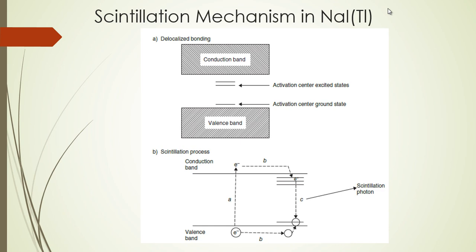In your sodium iodide crystal there are valence bands and conduction bands due to the delocalized electron bonding. The thallium impurity replaces one in a thousand atoms of sodium iodide — it is a very small impurity. Without thallium, the sodium iodide crystal has these two bands: the valence band and the conduction band.